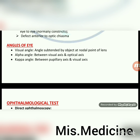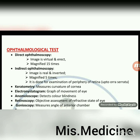Angles of the eye: visual angle, alpha angle and kappa angle. Visual angle: angle subtended by an object at the nodal point of the lens. Alpha angle: between visual axis and optical axis. Kappa angle: between pupillary axis and visual axis.